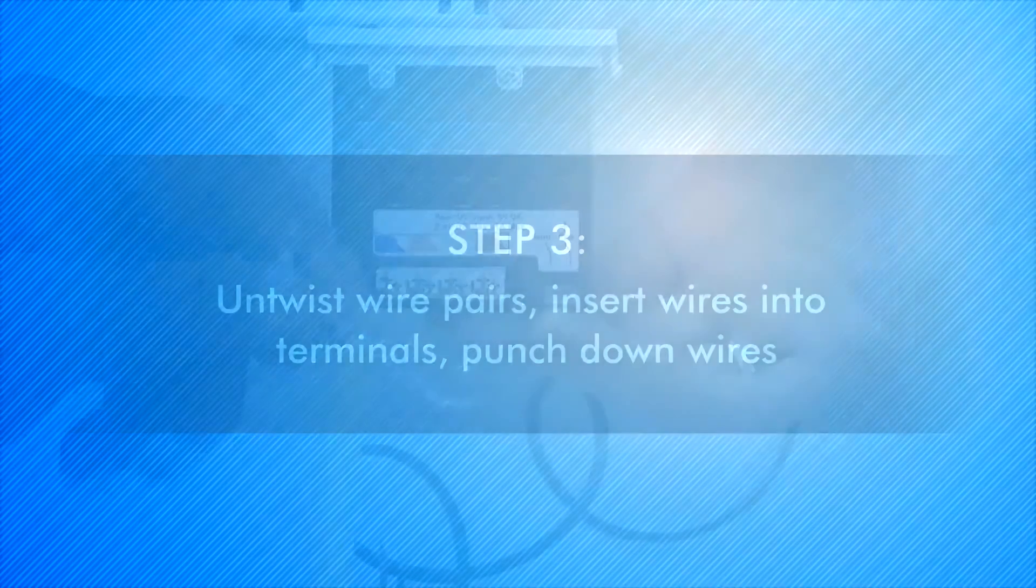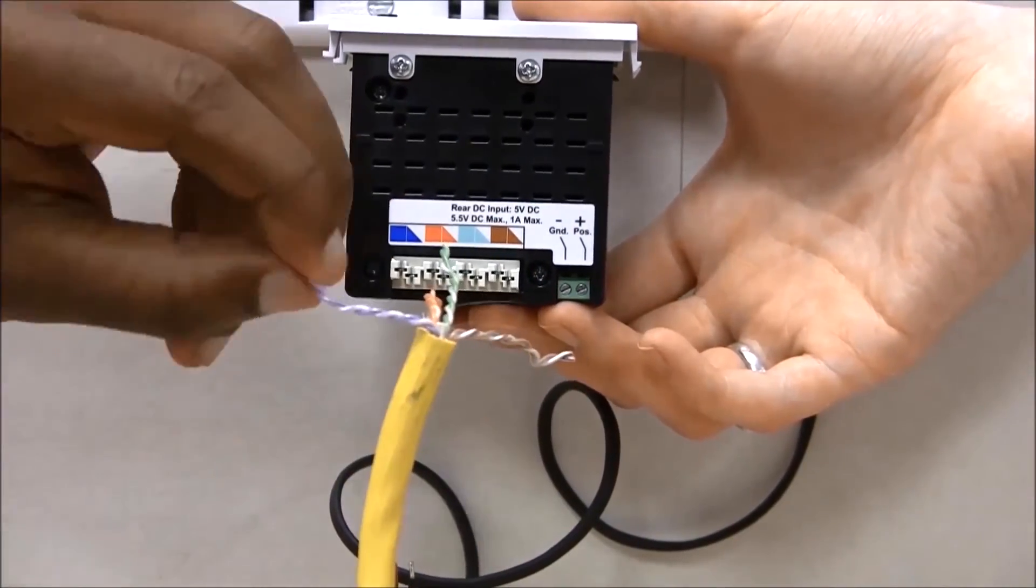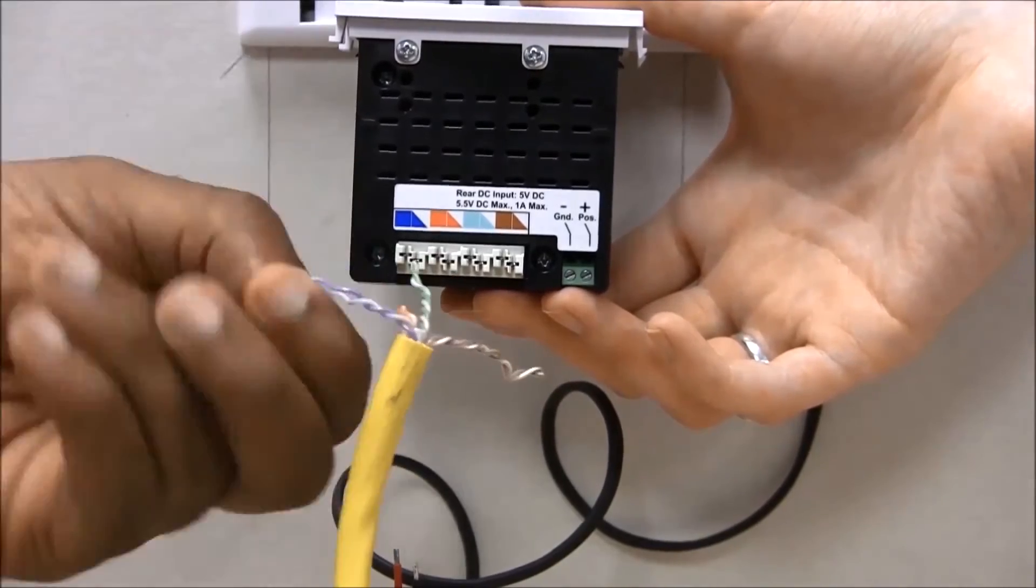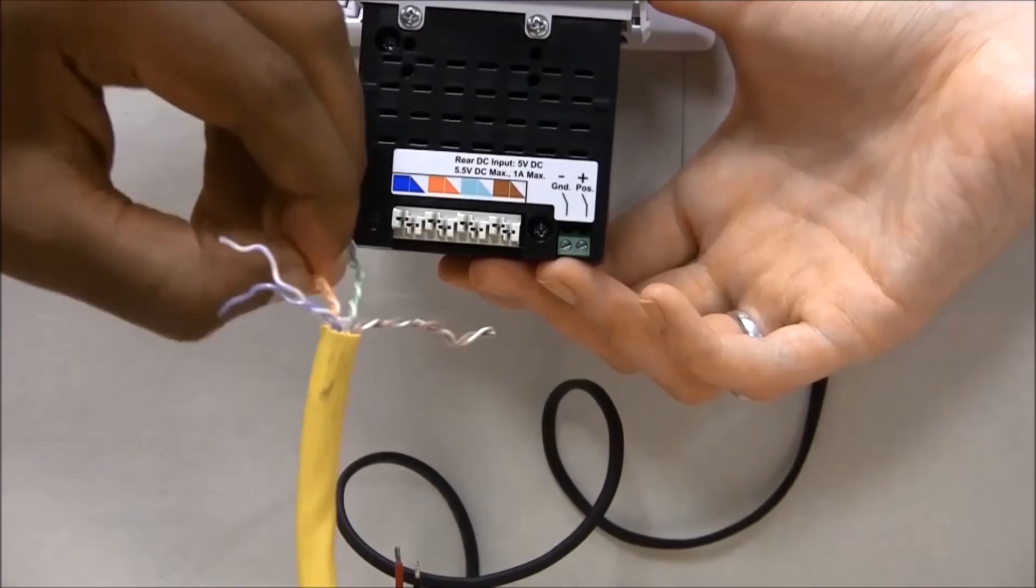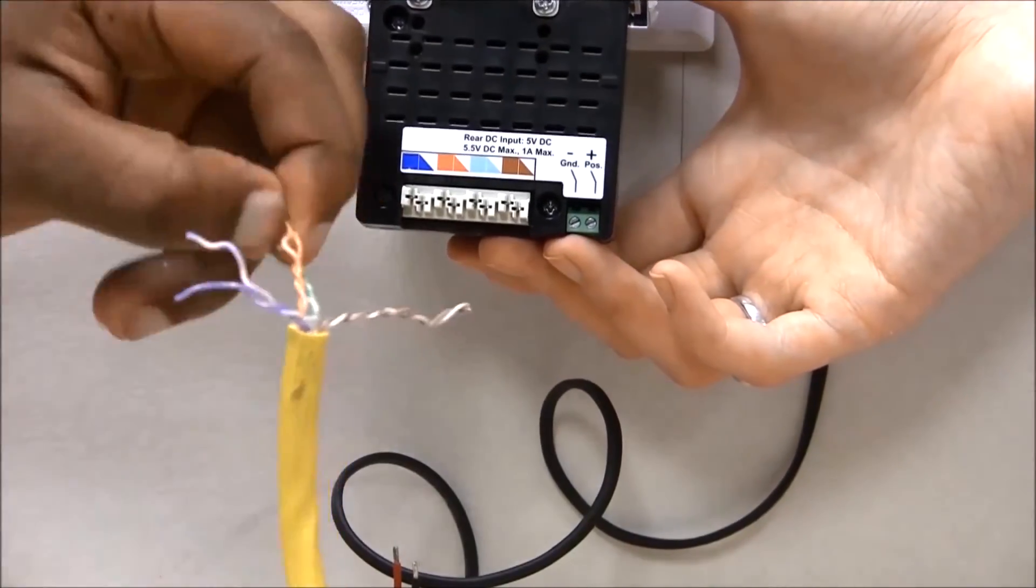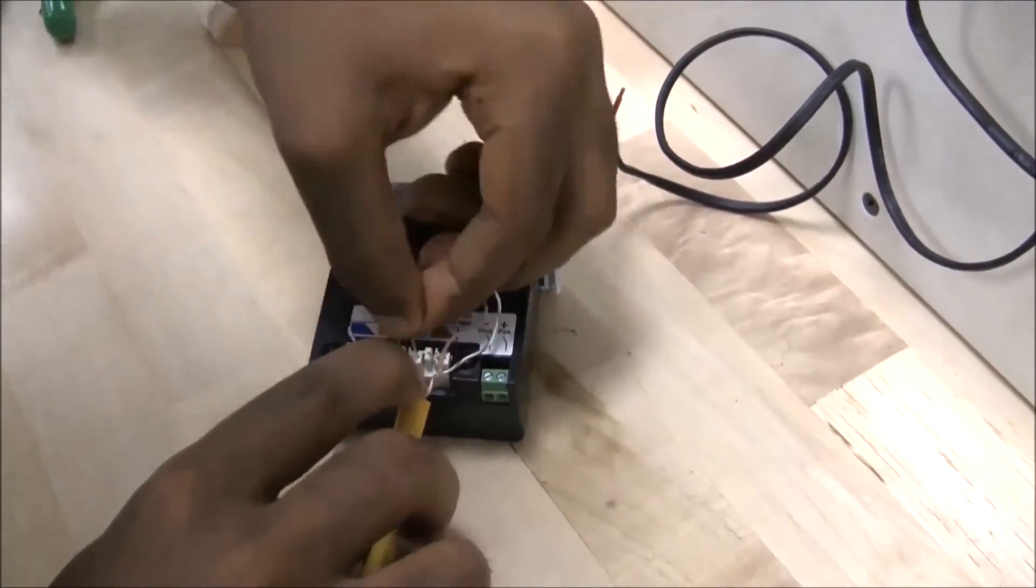Align wire pairs according to the color sequence on the extender termination diagram. Untwist wire pairs and pre-lace into corresponding 110 terminals. Lace inner pairs first to minimize distance skew between pairs. Maintain twist leading up to the point of termination as much as possible to provide the best electrical performance.